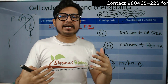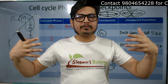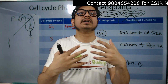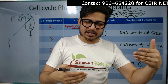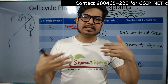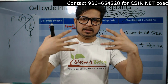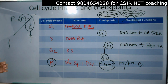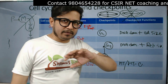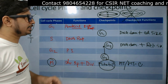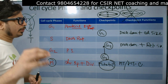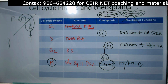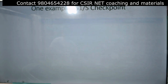The spindle assembly checkpoint checks whether the tension coming from both MTOCs connected to the sister chromatids is proper from both sides. If one side has more tension and the other has less, that indicates an error in connecting the kinetochore with the microtubule. This is the overall idea of cell cycle phases and checkpoints.